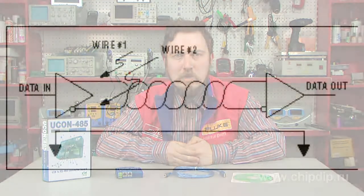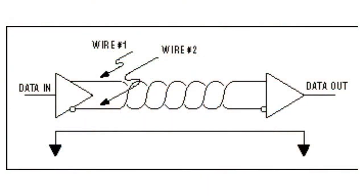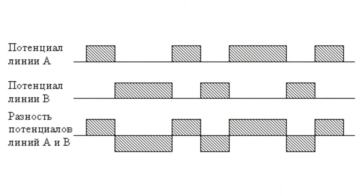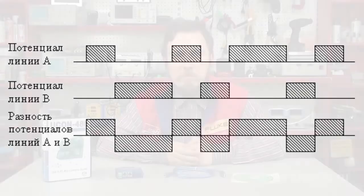The original signal is transmitted via one wire, conventionally A, and its inverted copy is transmitted via the other, conventionally B. In other words, if there is a 1 on one wire, then there is a 0 at the other, and vice versa. Thus, between the two wires of a twisted pair, there is always a potential difference. When there is a 1, it is positive. When there is a 0, it is negative. The signal is transmitted by this very potential difference.